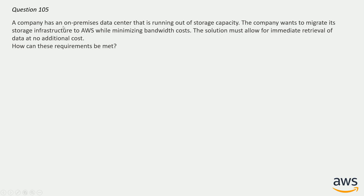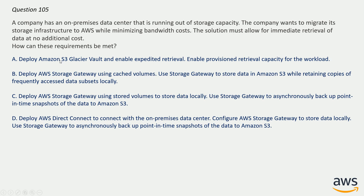Question number 105: A company has an on-premises data center that is running out of storage capacity. The company wants to migrate its storage infrastructure to AWS while minimizing bandwidth cost. The solution must allow for immediate retrieval of data at no additional cost. The correct answer is option B: Deploy AWS Storage Gateway using cached volumes, storing data in Amazon S3 while retaining copies of frequently accessed data subsets locally. Cached volumes are available on premises, increase retrieval speed, and meet the requirement of immediate retrieval at no additional cost.